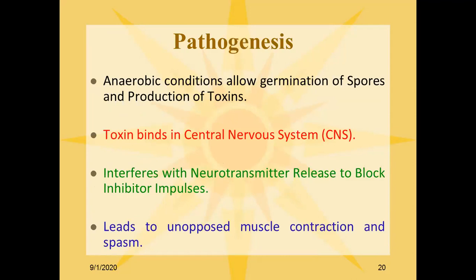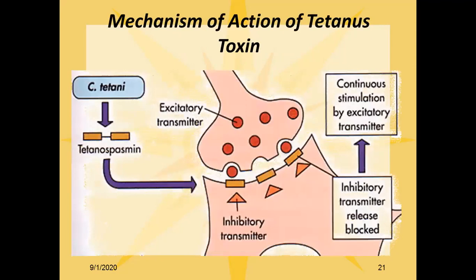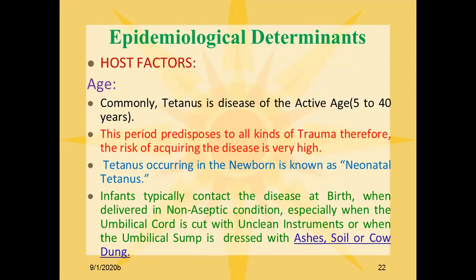The tetanus toxin interferes with neurotransmitter release, blocking inhibitory impulses, which leads to unopposed muscle contractions and spasm. This is the mechanism of action of tetanus toxin: Clostridium tetani affects or blocks the inhibitory impulses. Tetanus is commonly a disease of the active age group from 5 to 40 years, a period which predisposes to all kinds of trauma, making the risk of acquiring the disease very high.